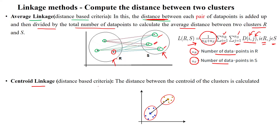Finally there is centroid linkage, which is also a distance-based metric. Here you find the centroid — the cluster center — of each cluster. With two clusters r and s, it identifies the cluster centroids and then takes only the distance between the centroids to perform the clustering analysis.